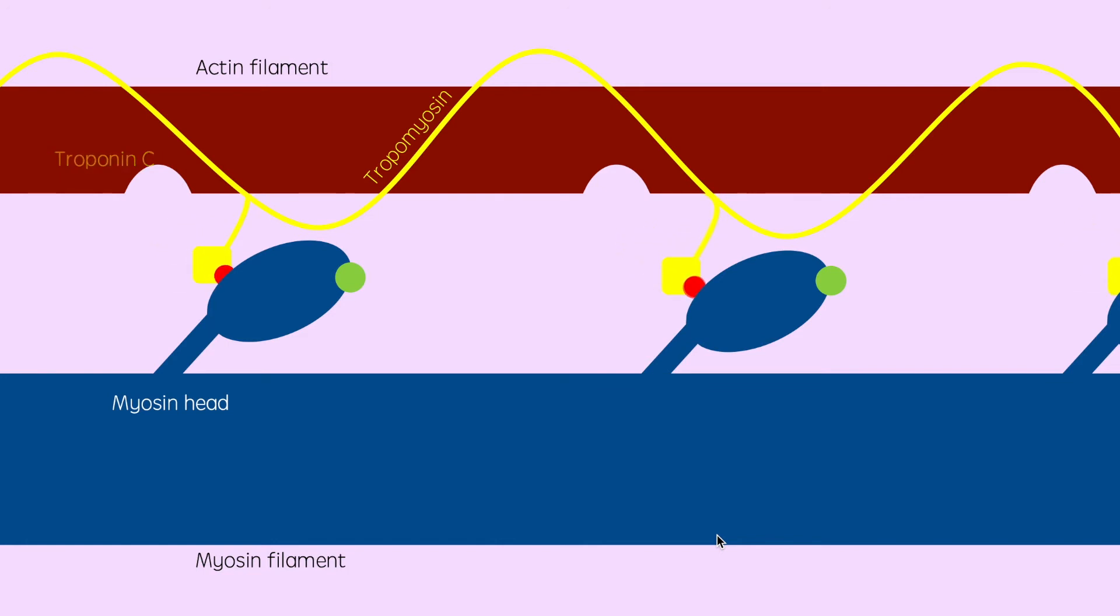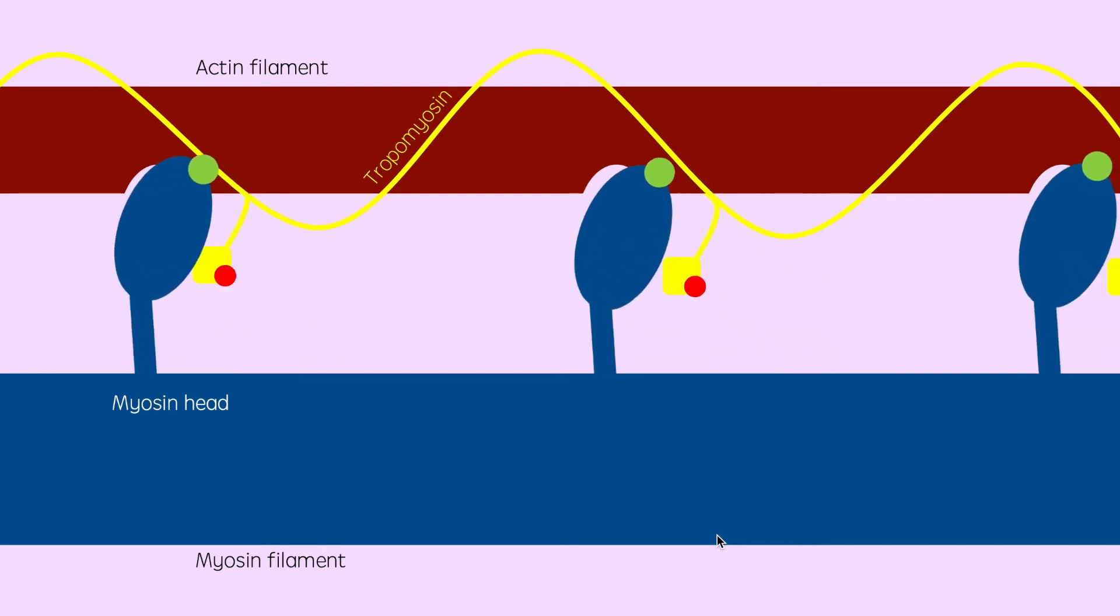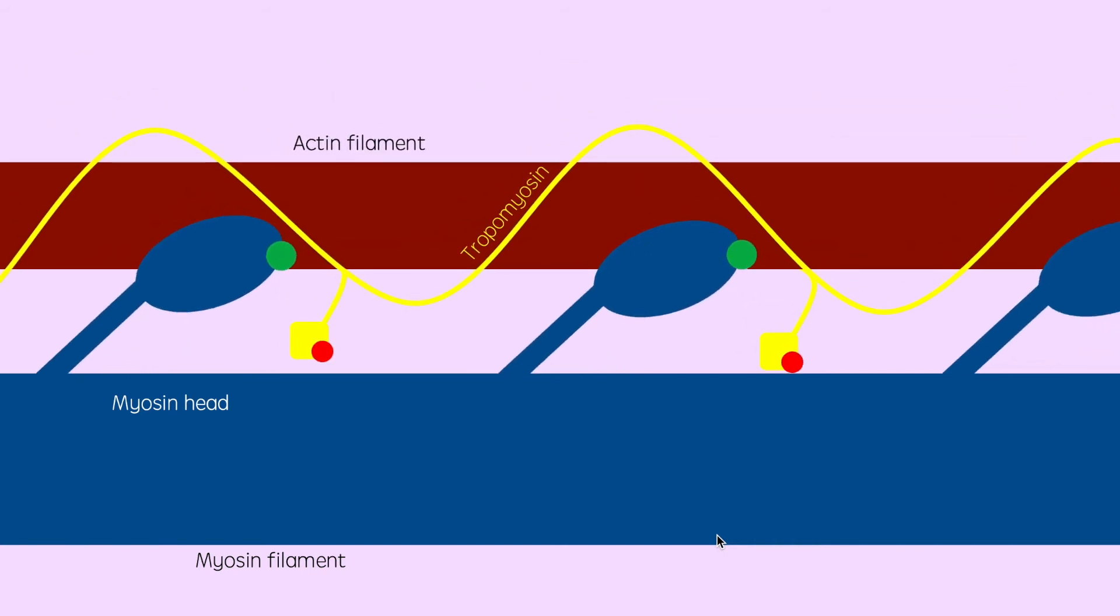This allows myosin heads to bind to actin, forming a crossbridge. The ATP molecule to which the myosin head is attached becomes hydrolyzed into ADP and inorganic phosphate. This provides the energy for the rotation of the myosin head, producing the power stroke. At this point, ATP re-associates to the head, causing it to return to its original conformation before new crossbridges are formed and the process is repeated, causing the cell to contract.